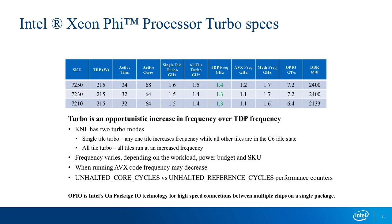It also has turbo mode — same as with Xeon processors. There's the model-specific base frequency and then turbo mode can slightly increase the frequency if cooling is sufficient and power supply is adequate. There's also the AVX frequency: when using high-power instructions like AVX-512, the cores clock down a little bit — I think about 200 MHz.